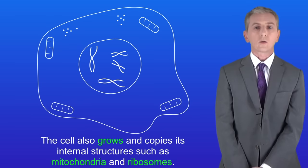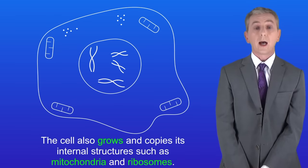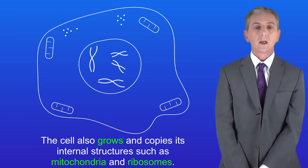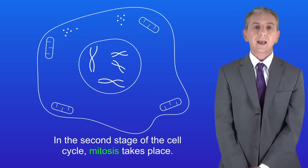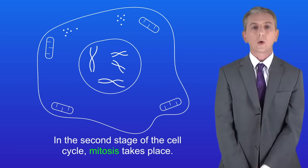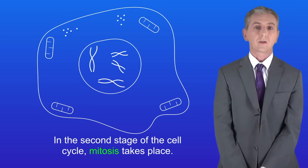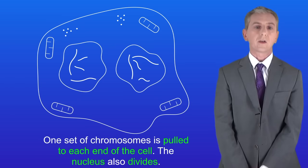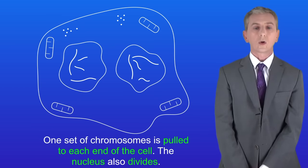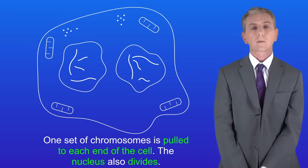The cell also grows and copies its internal structures, such as mitochondria and ribosomes. In the second stage of the cell cycle, mitosis takes place. One set of chromosomes is pulled to each end of the cell, and the nucleus also divides.